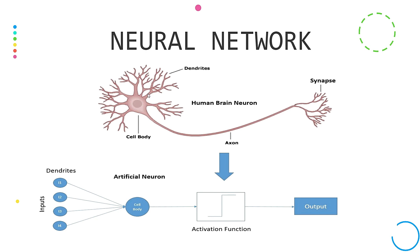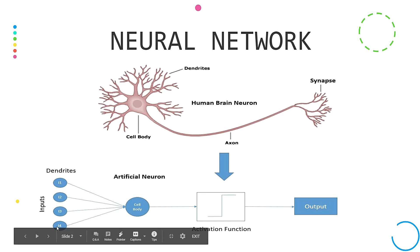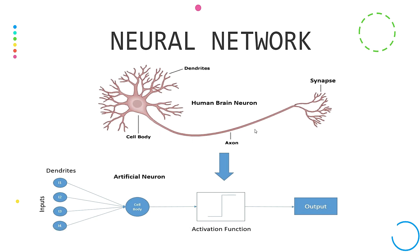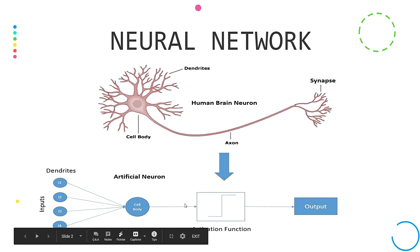We can look at this diagram. So these are the inputs. Let's suppose, if we look at the back of the neuron, we grab the neuron — that is the brain. The signal is generated. A light signal is generated. So this is the Dendrites.